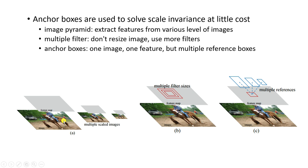The idea of anchor boxes is that we only use one filter and one image at one scale, but we propose different reference boxes as our initial proposals. These are called anchor boxes. These anchor boxes are free — they're fixed, they come out of nowhere, they don't need to be computed. Each position has some reference boxes, and that's it.